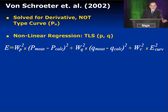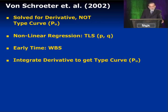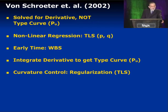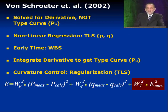We can minimize the error. He assumed that early time was controlled by wellbore storage. Once he'd gotten the derivative he was looking for, he integrated that derivative to give us the type curve — a simple mathematical procedure. He also introduced curvature control, which he called regularization. That's part of the total least squares procedure; it's a way of minimizing errors while keeping control of the curvature.